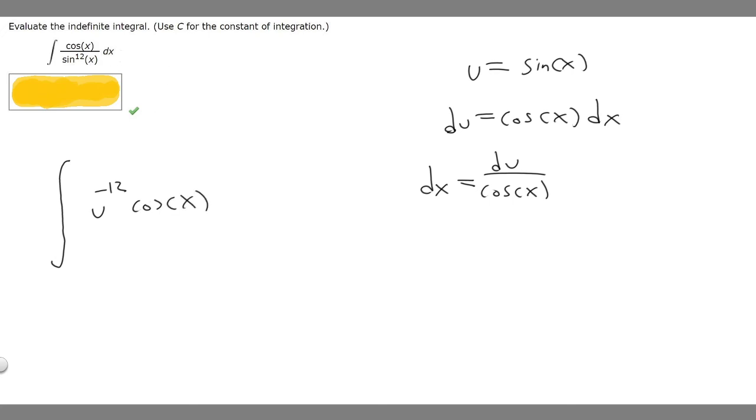Then we have dx. Then we've got to replace it with whatever we solve for dx for. So in this case it's du over the cosine of x. So we've got it in this form. Now you can realize that cosine of x will cancel with this one. So these will cancel. And we'll just be left with u to the minus 12 times du.